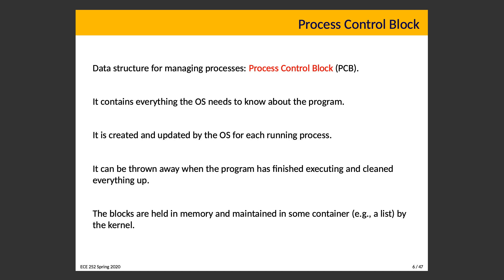The process control block is how the operating system thinks about scheduling. It's also how it makes sure that if you forget to deallocate memory, that memory gets cleaned up when the process is no longer running. Files are automatically closed — it's all managed through the process control block.